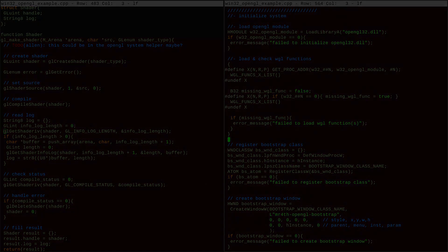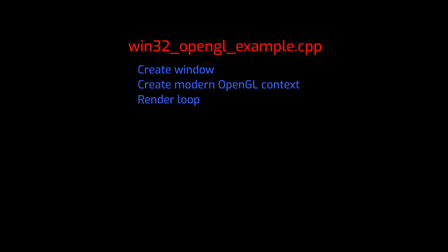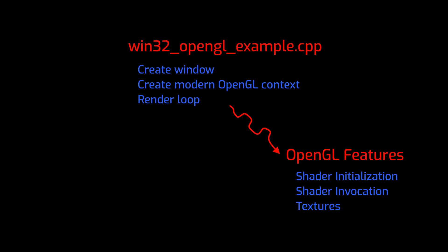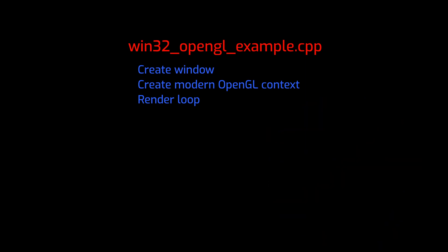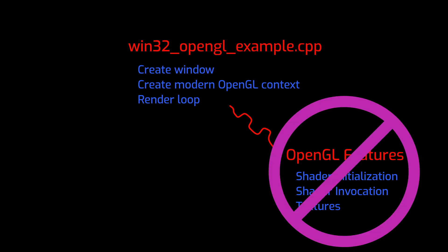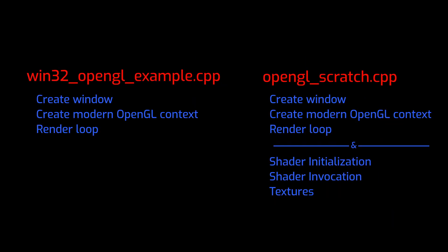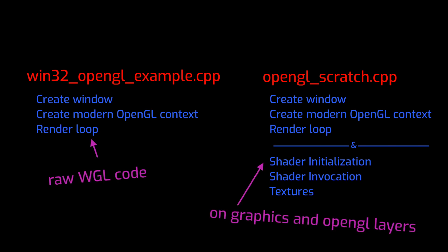I'm going to pause and go a slightly different direction. This Win32 OpenGL example I have in my code base isn't really very useful for the kinds of things I want to do. It's a good example for how to bootstrap an OpenGL window and context, but I'd have to set up all this common OpenGL stuff over and over again. It would make more sense to have an OpenGL scratch program that directly relies on my OpenGL definitions, functions, and helper utilities.